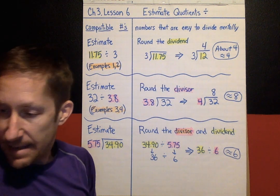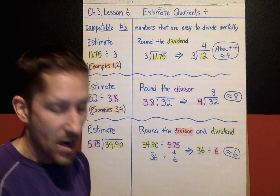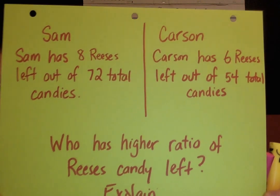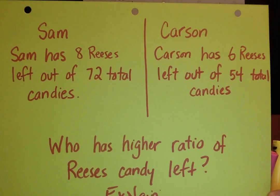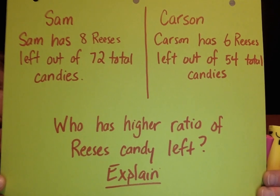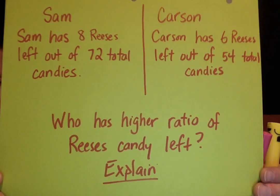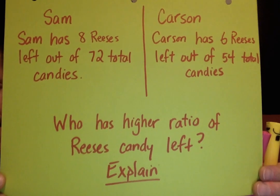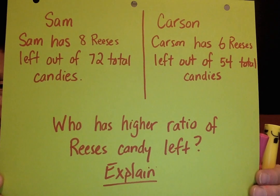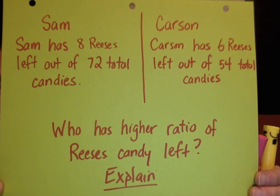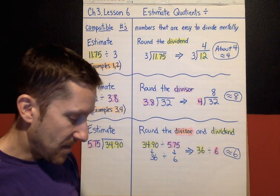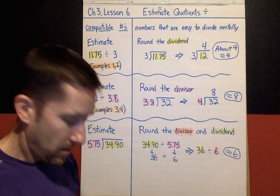The hidden treasure for today involves this problem: two kids have Halloween candy left. Sam has 8 Reese's left out of 72 total candies, and Carson has 6 Reese's left out of 54 total candies. The hidden treasure question is: who has the higher ratio of Reese's candy left, and explain your answer. There are lots of ways you could do it. I'll see you soon for chapter 3 lesson 7!